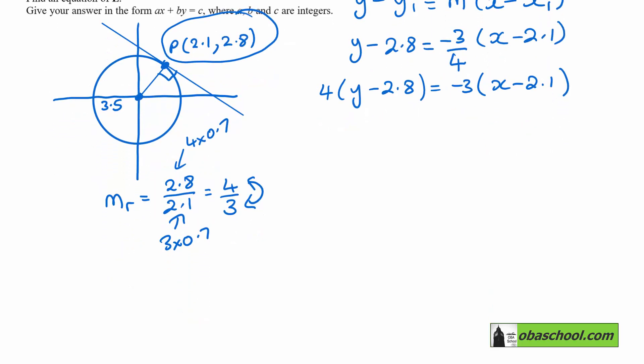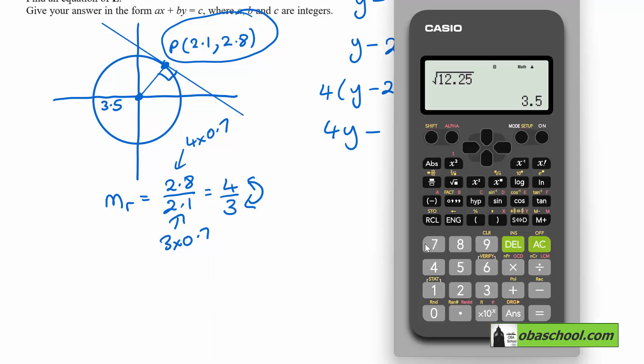So 4y minus 4 times 2.8—4 times 2.8 is 11.2.